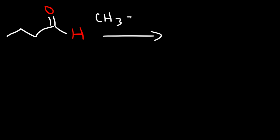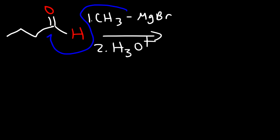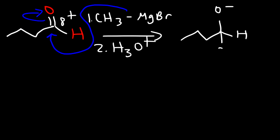Let's work on an example problem. We have an aldehyde functional group and we're going to react it with methyl magnesium bromide, followed by H₂O⁺. The Grignard reagent will attack the carbonyl carbon, causing the pi bond to break. This carbon has a partial negative charge and is attracted to the partially positive carbonyl carbon, giving us an oxygen with a negative charge and a methyl group added to the aldehyde.